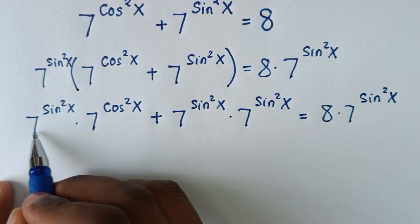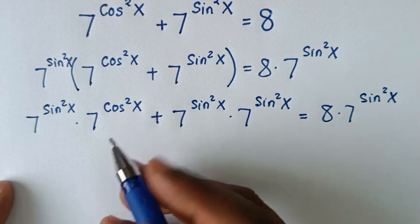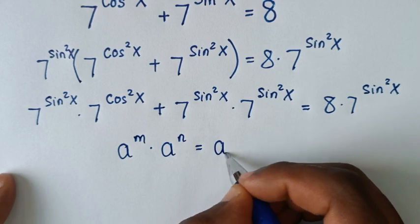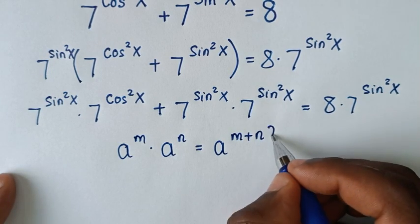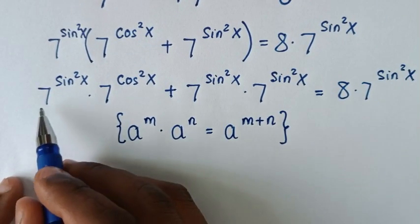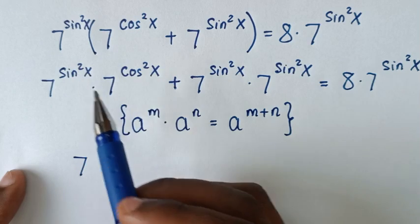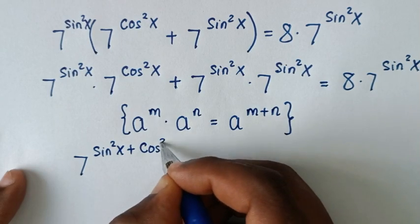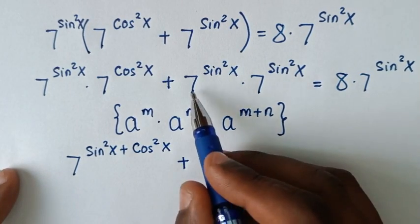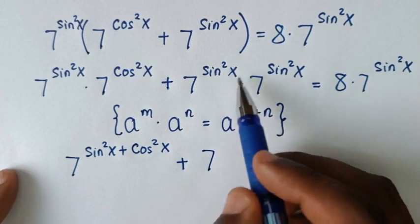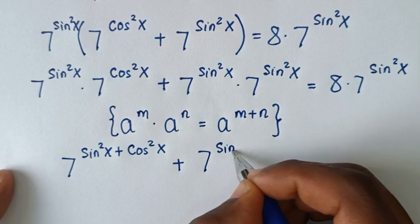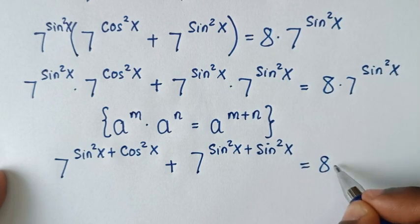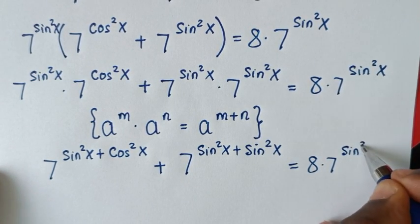In the next step, we apply the exponential rule: a^m times a^n equals a^(m+n). So 7^(sin²x) times 7^(cos²x) becomes 7^(sin²x + cos²x), plus 7^(2sin²x), equals 8 times 7^(sin²x).